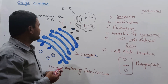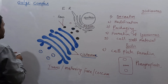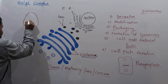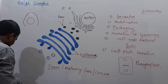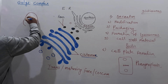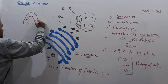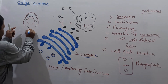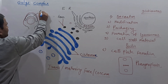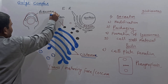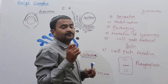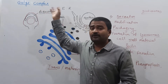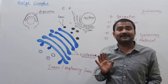Another function of the Golgi complex relates to human reproduction and sperm structure. In the sperm, there is a head region containing the nucleus. This nucleus of the sperm is covered by a cap-like structure called the acrosome. The acrosome is also formed from the Golgi complex — the Golgi complex helps in the formation of the acrosome.